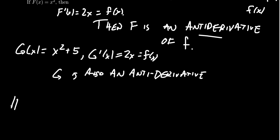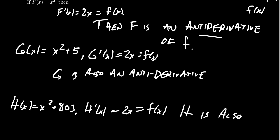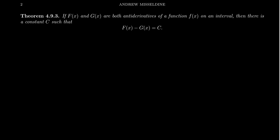And so I'm going to take a function h of x, which looks like x squared plus 803. Well, what is its derivative? h prime is going to equal 2x again, which is again f of x. And so we get that h is also an anti-derivative of this function, little f of x. And so, like we see in that previous example, it's important to know that it's very possible that a function can have multiple anti-derivatives. And this is actually quite commonplace.